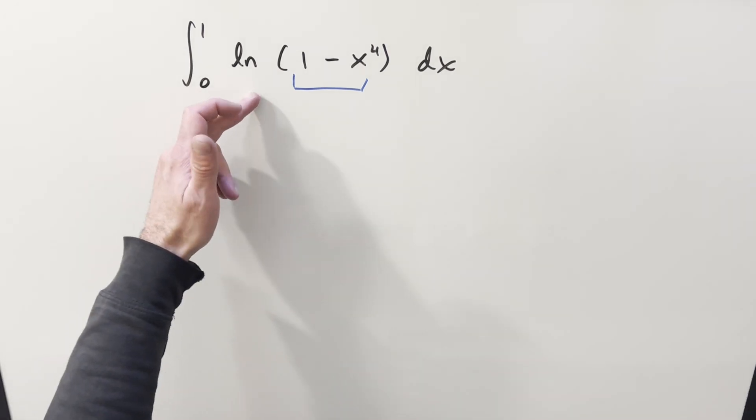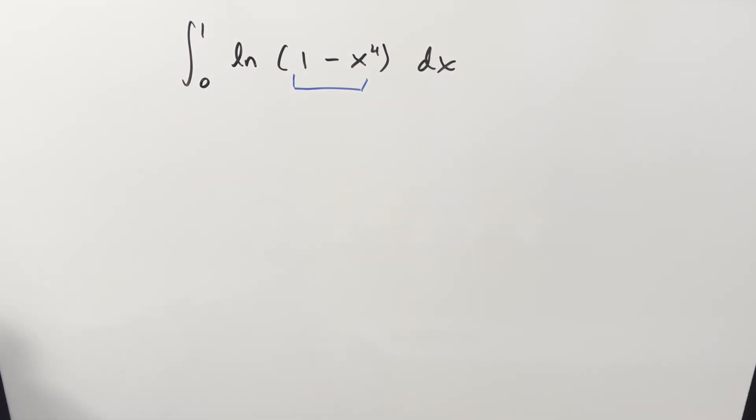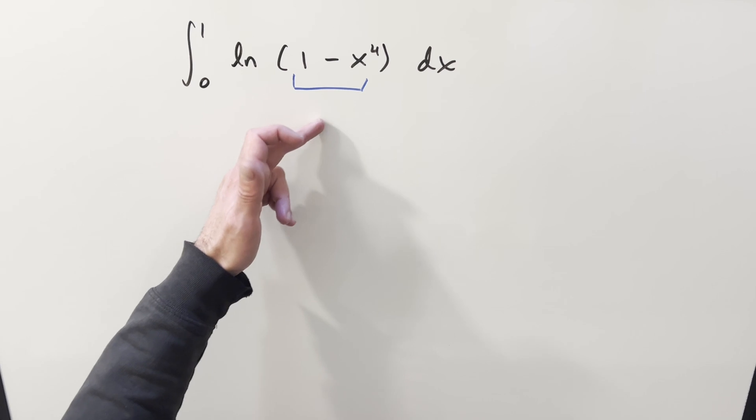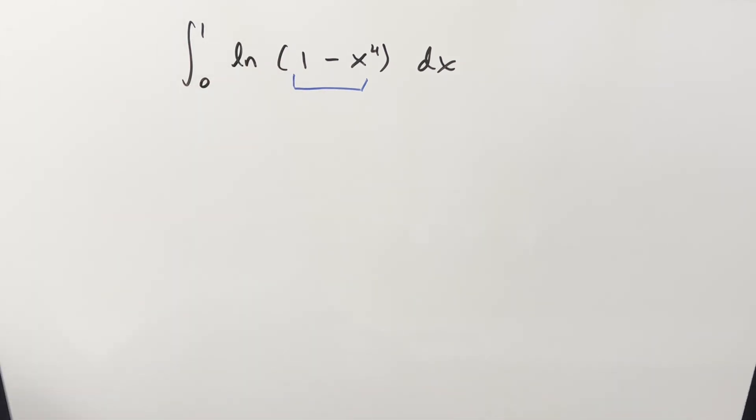But when I did it, if I just go ahead right away and do integration by parts on it, it's not that great because then you kind of end up with something with x to the fourth in it. It's fine, but it just takes a few extra steps.